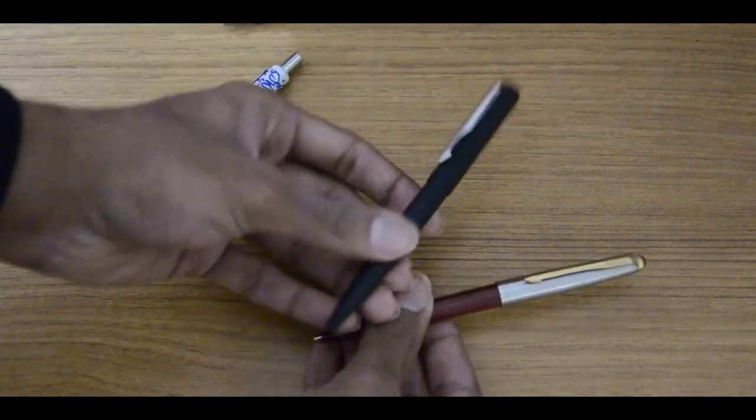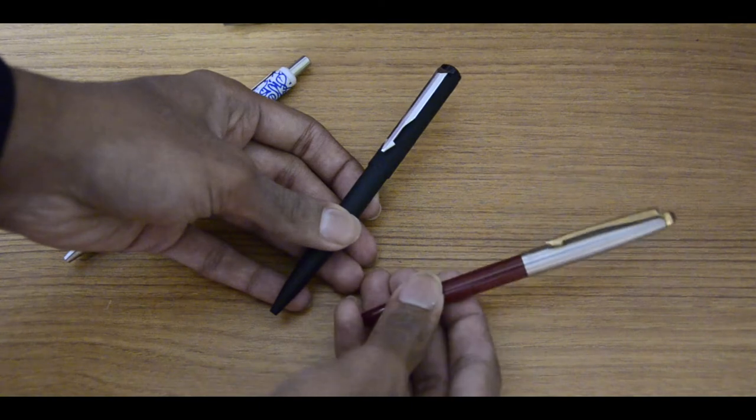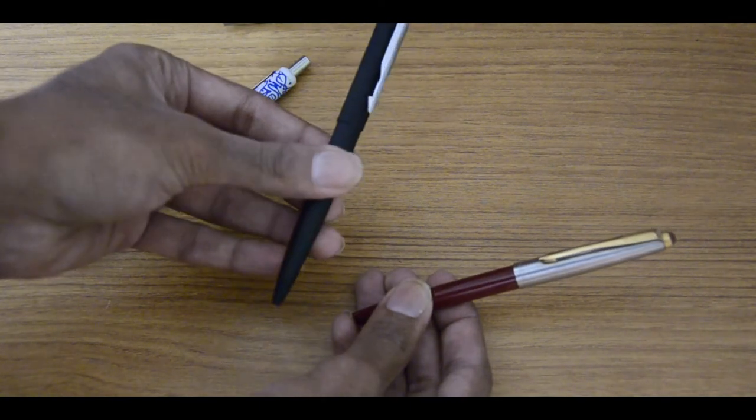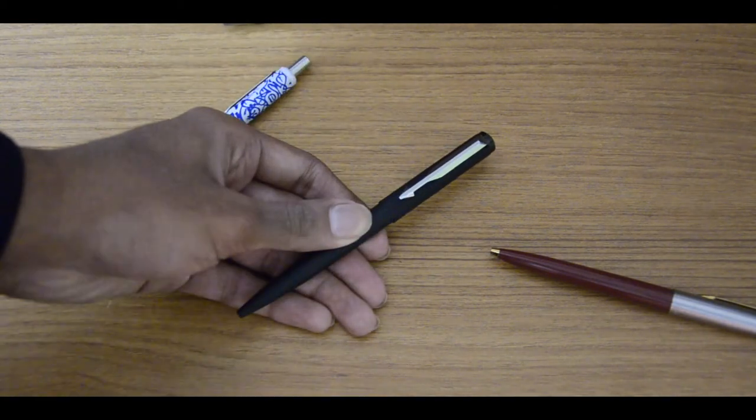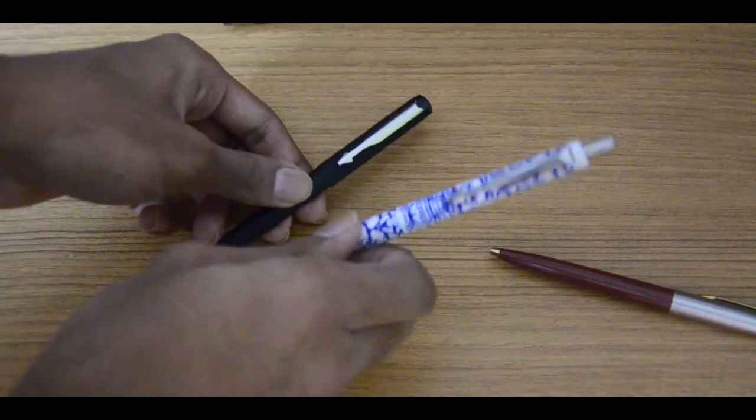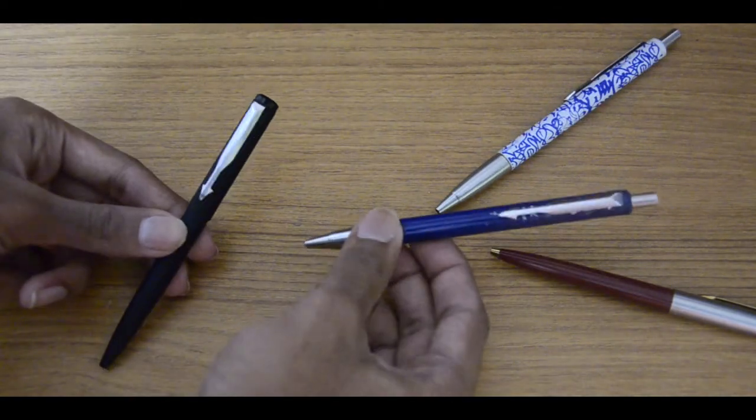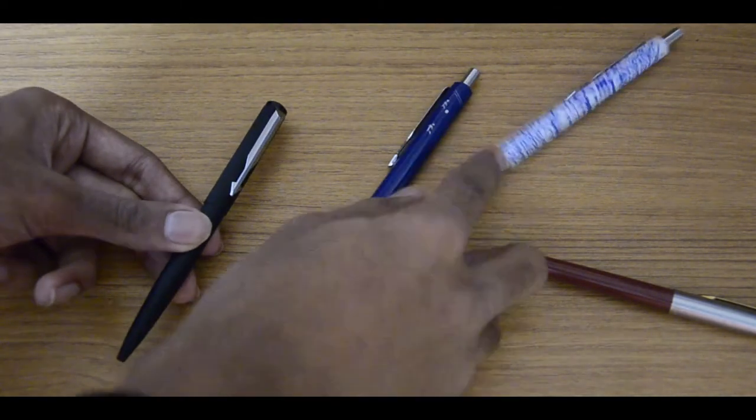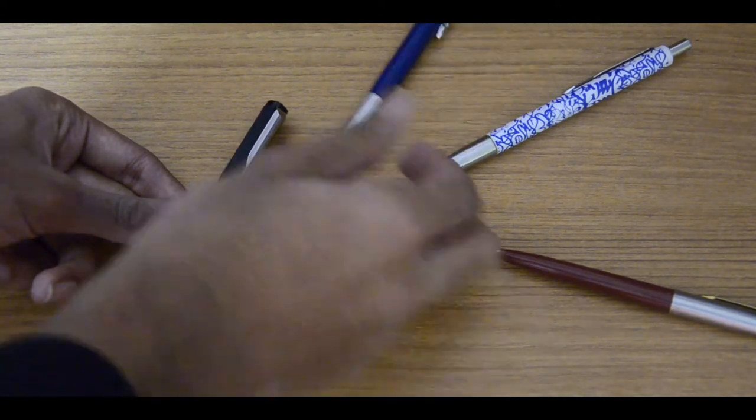But it's way cheaper - this is 250 rupees and the Vector Matte Black is 500 rupees. So the Vector Matte Black is actually two times more expensive compared to this pen which was around 250. This one was around 300.